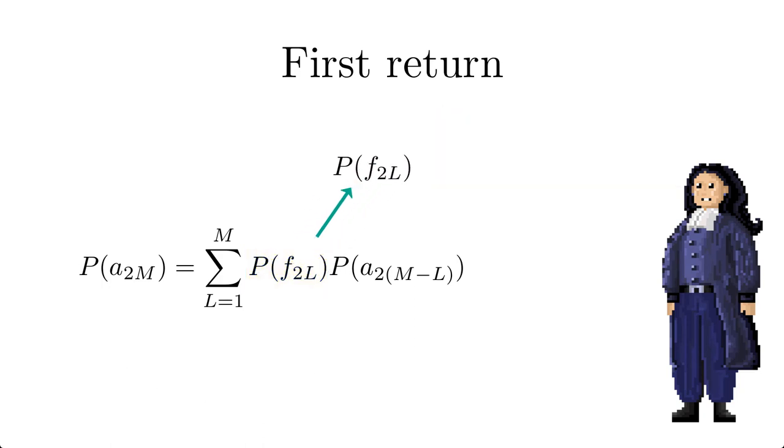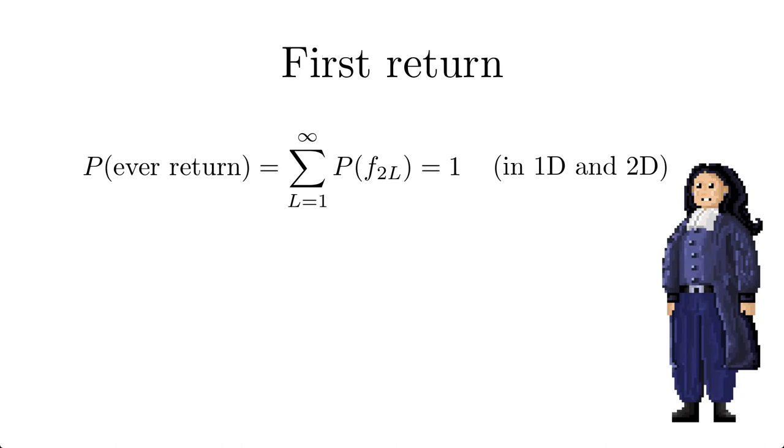After a somewhat lengthy calculation summing all probabilities of first return yields the probability to ever return which in 1d and 2d is equal to 1. Pascal will definitely see her bottle again. But it may take a very long time.